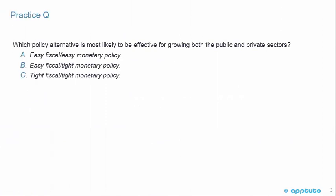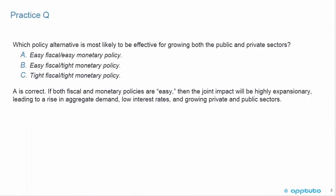Which policy alternative is most likely to be effective for growing both the public and private sectors? If both fiscal and monetary policies are easy, then the joint impact will be highly expansionary, leading to a rise in aggregate demand, low interest rates, and growing private and public sectors.